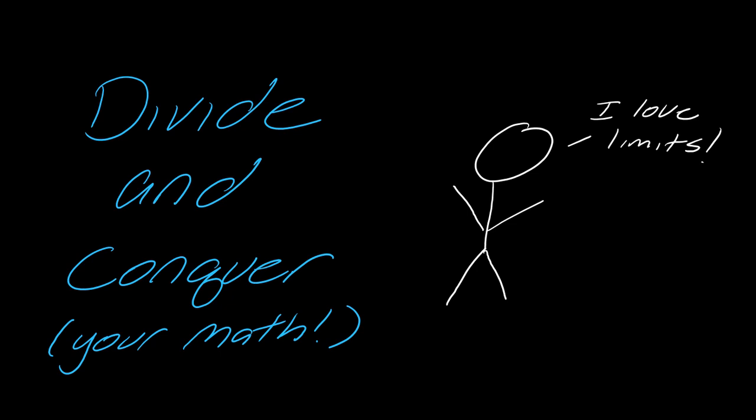Those are some of the really common algebraic tricks you'll use with limits when you get 0 over 0. It's really rare that a limit does not exist, and if you think it doesn't, you should use the graph to help decide. I do have videos where I explain that in more detail. Hopefully I'll see you in another one — thanks for watching.